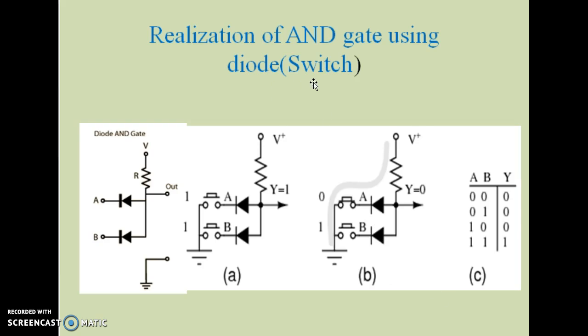AND gate can be realized by using diode as a switch. Here, two input AND gate is implemented. Input A and B are provided through the cathodes of the diode. Anodes are shorted together and connected to VCC through the resistor. Output is taken from the common anode point with respect to ground. Here, out of the four possible conditions, two conditions are shown.